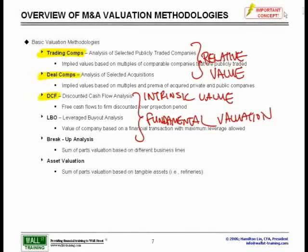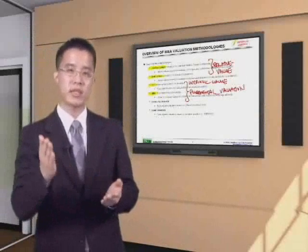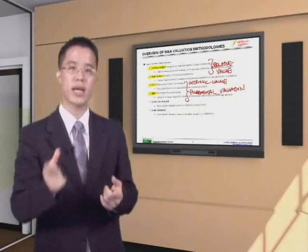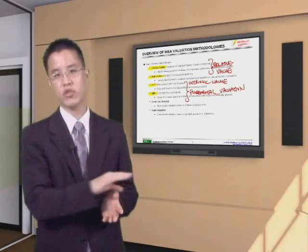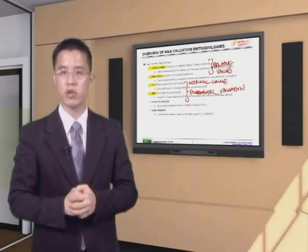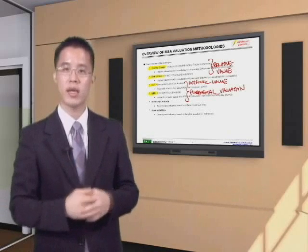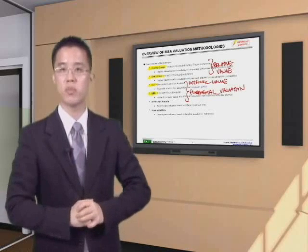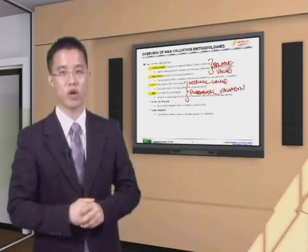Leveraged buyout analysis is also somewhat similar. It takes a look at the core profitability and core ability of a company to generate cash flow, and then says, let's take those cash flows, lever this company up a great deal, and use the internally generated cash flows to pay down the debt, hence building our equity. We will have a brief discussion on LBOs towards the end of this module. For more information on leveraged buyouts, as well as a fuller explanation, please refer to our module titled LBO Overview.